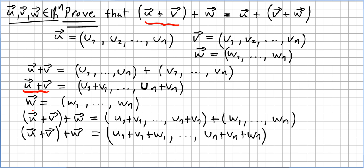And then we have vector w. Vector w is this one. Okay, so what is u plus v? It's u1 plus v1 till un plus vn. It's this addition here. Plus w, w is w1 to wn.